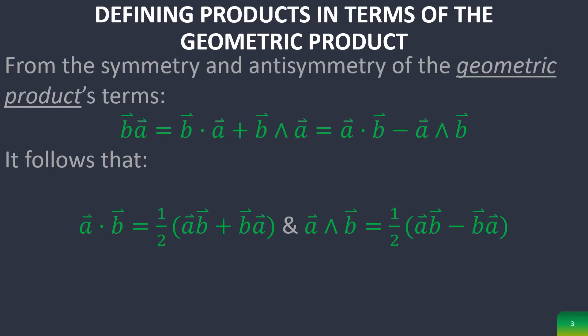From the symmetry and antisymmetry of the geometric product's terms, we can prove that if you reverse the order of the geometric product, if you commute it, then you get a negative sign in front of the outer product because this is an antisymmetric term. It thus follows that you can represent each term as a combination of the geometric product.